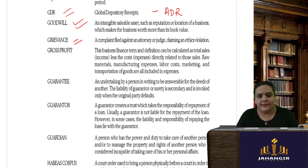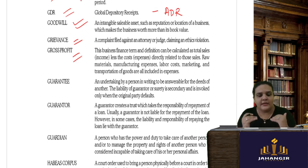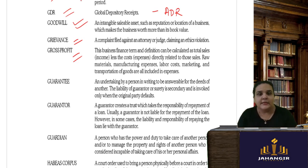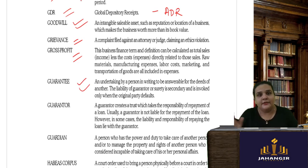Grievance is a complaint filed against an attorney or a judge claiming an ethics violation. Gross profit is the profit of the business from total sales when you subtract all expenses directly related to sales — those directly deducted expenses give you gross profit.